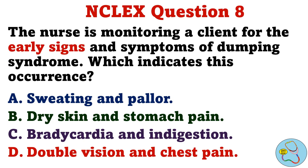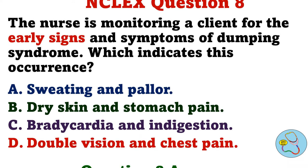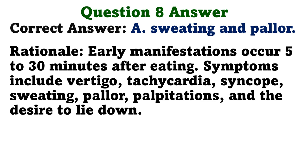Question 8. The nurse is monitoring a client for the early signs and symptoms of dumping syndrome. Which indicates this occurrence? A. Sweating and pallor. B. Dry skin and stomach pain. C. Bradycardia and indigestion. D. Double vision and chest pain. The correct answer is A, sweating and pallor. Rationale: Early manifestations occur 5 to 30 minutes after eating. Symptoms include vertigo, tachycardia, syncope, sweating, pallor, palpitations, and the desire to lie down.